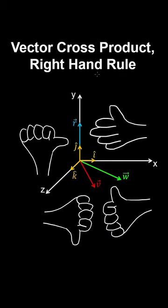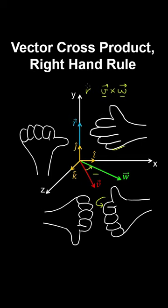The right-hand rule can be used to visualize the vector cross product. Suppose we want to cross vector V with W. You take your right hand, place the bottom of your right hand in the plane of vectors V and W, and curl your fingers from the first vector V to the second vector W involved in the cross product. Your thumb then points in the direction of the resulting vector R.